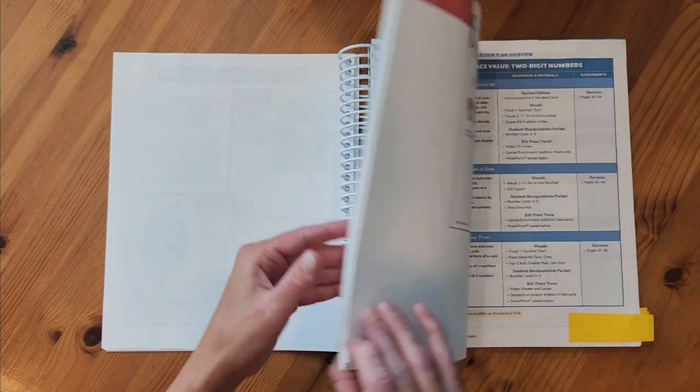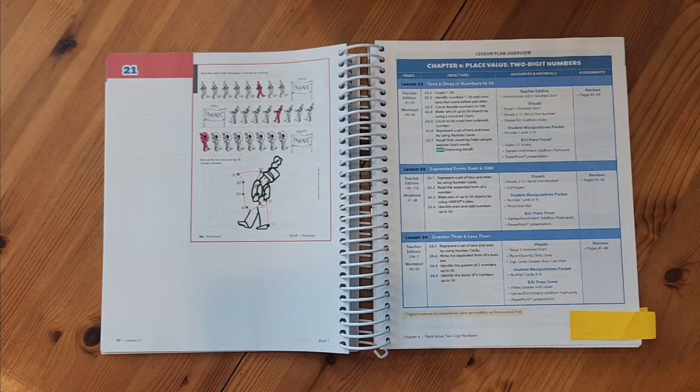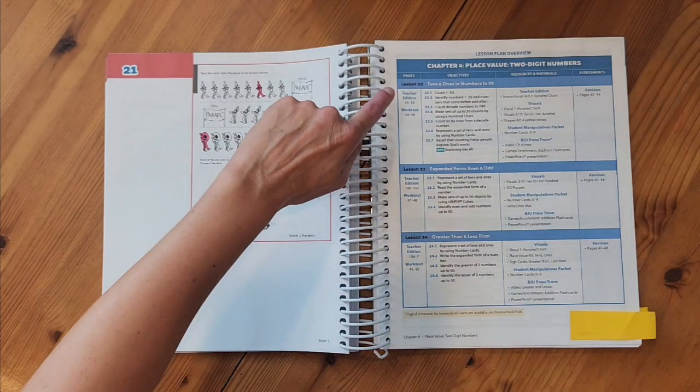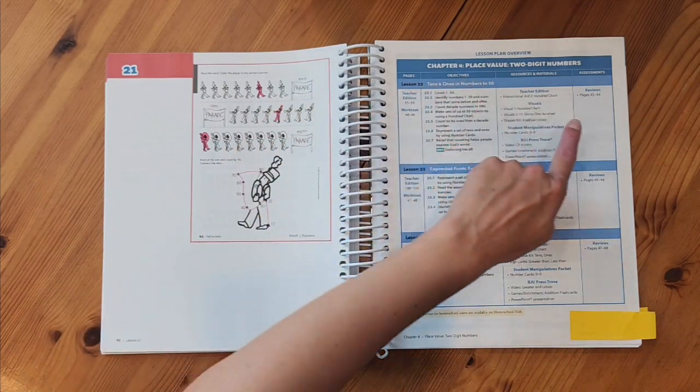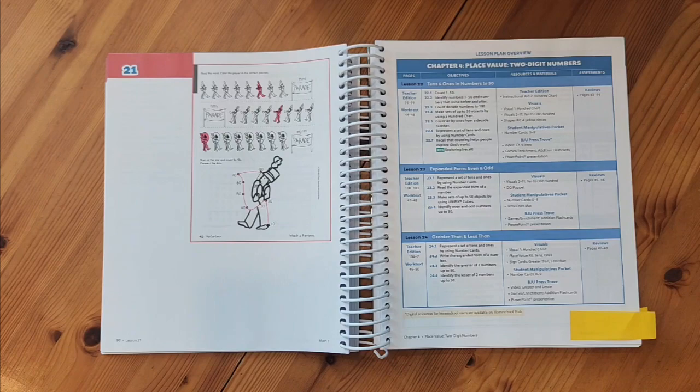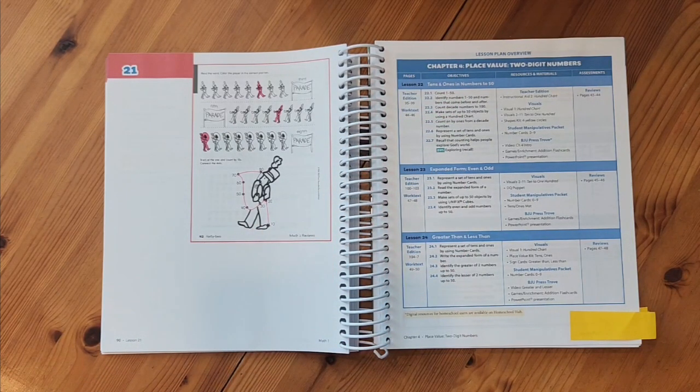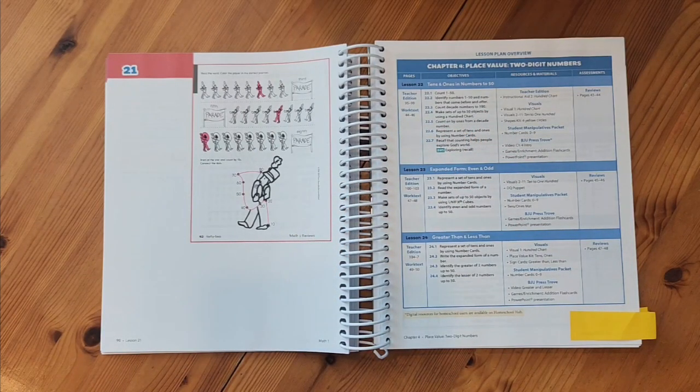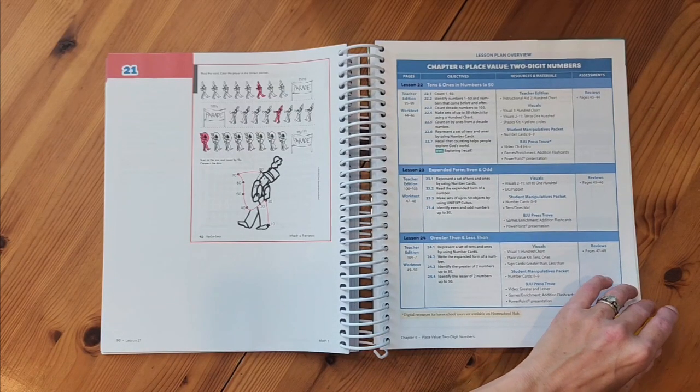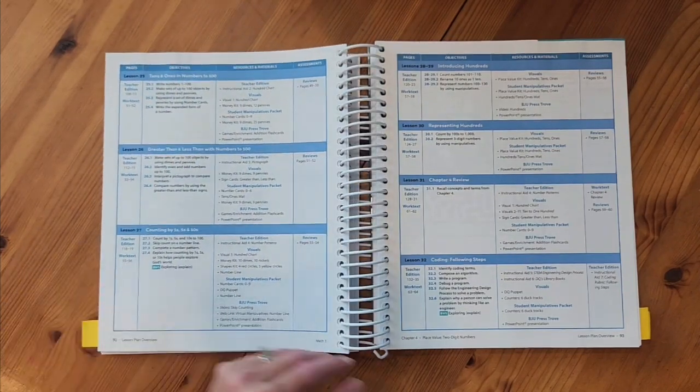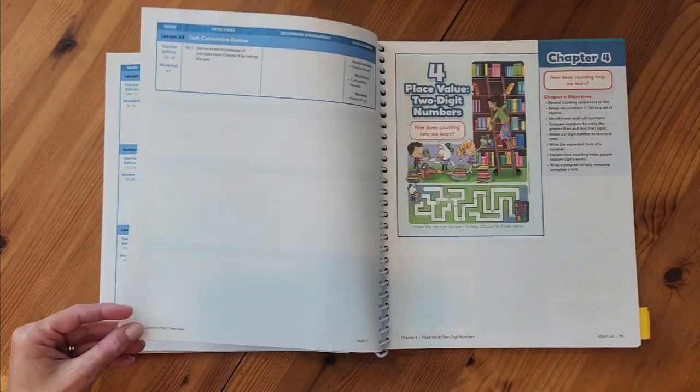And then we'll jump into our lesson plan overviews. We're actually going to jump ahead and go to chapter four. The lesson plan overview is where I would go to get an overview for the entire chapter and would also be where I go to plan lessons for the week. I have a quick way to see the pages for the teacher edition, the work text, and the reviews if I need that extra practice for my child. I can see the objectives for doing in the chapter. I can also see what I need for the teacher edition, if there's any instructional aids I might need to pull out, or if I need any visuals or manipulatives. And these lesson plan overviews are at the beginning of each chapter throughout this entire book.